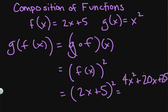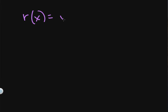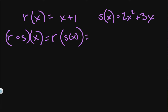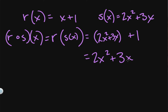Let's look at a different example. If we've got r of x equals x plus 1, and s of x equals 2x squared plus 3x, then r of s of x means I start with my r function — r is x plus 1 — and I plug in 2x squared plus 3x. So this gives me 2x squared plus 3x plus 1.